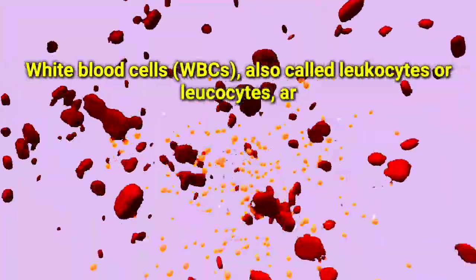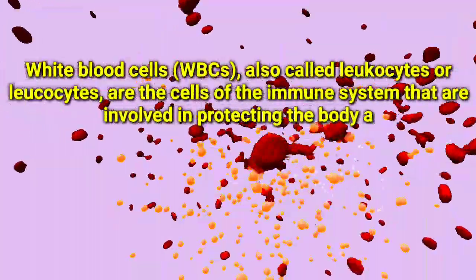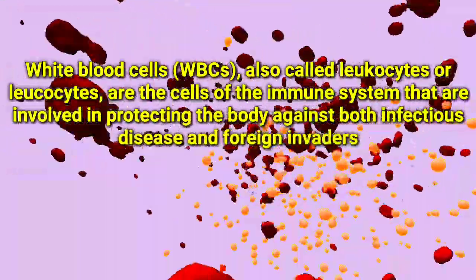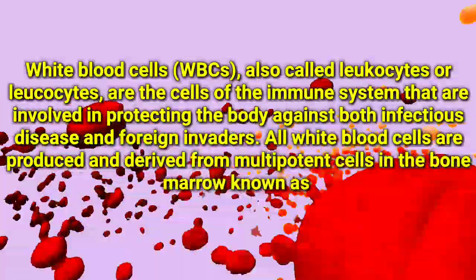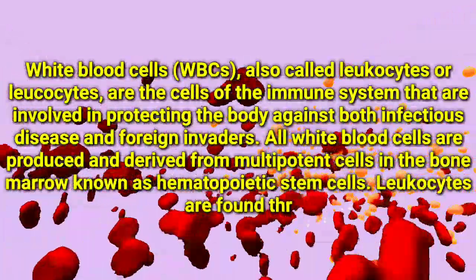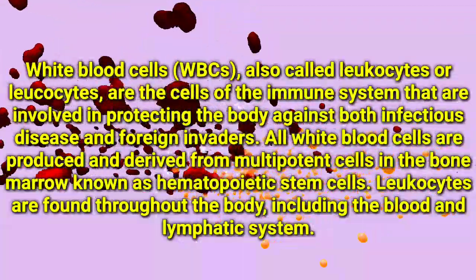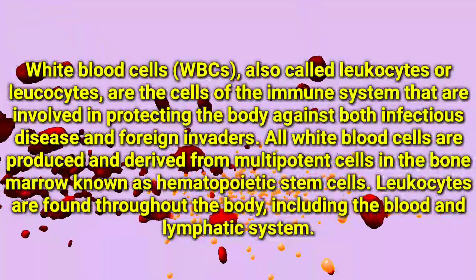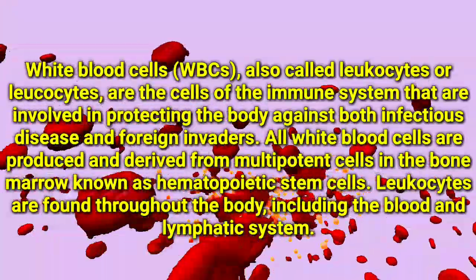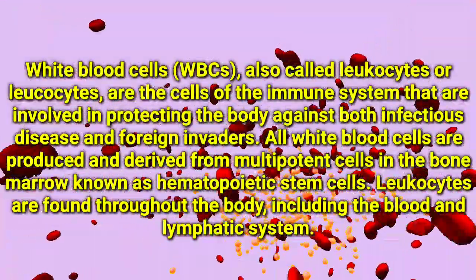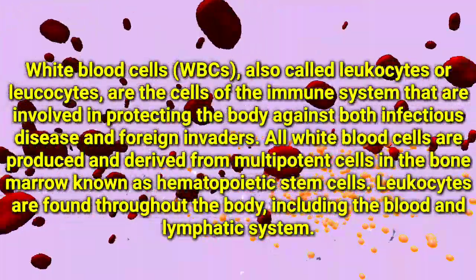White blood cells, also called WBCs, leukocytes, are the cells of the immune system involved in protecting the body against both infectious disease and foreign invaders. All white blood cells are produced and derived from multipotent cells in the bone marrow known as hematopoietic stem cells.